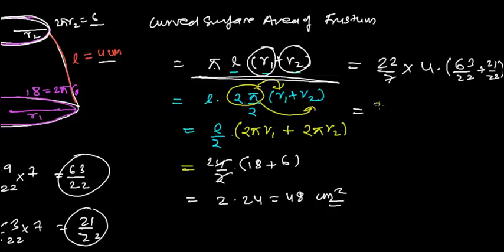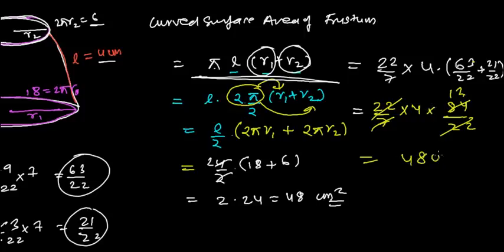And now, 7 times 12, because 12 times 7 is 84, and 22 and 22 will cancel out, and 4 times 12, that is 48 centimeter square. So again by this method also you can find out. So anyhow, whatever you feel easier, right, doing that way, that will be the curved surface area.